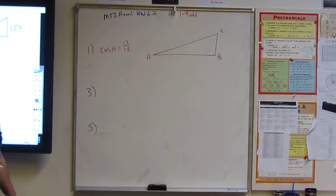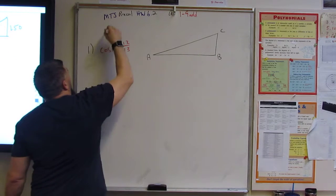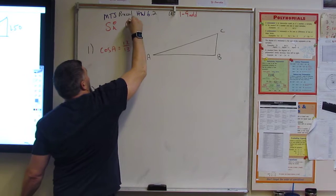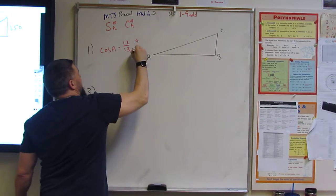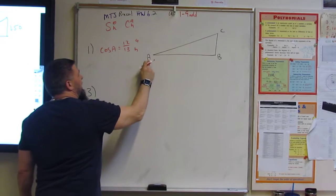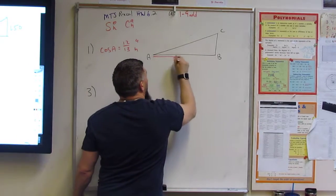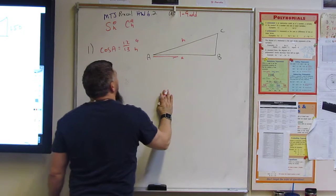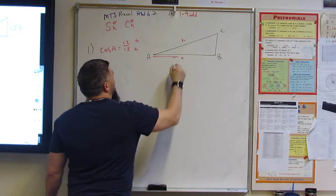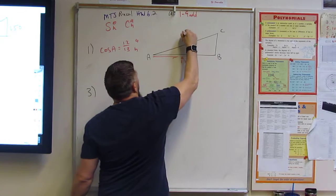Okay, if that's true, we know cosine, so this is A over H, right? We're talking about A, so it's A, this is A, and this is H. So then this is 12, and this is 13, right?